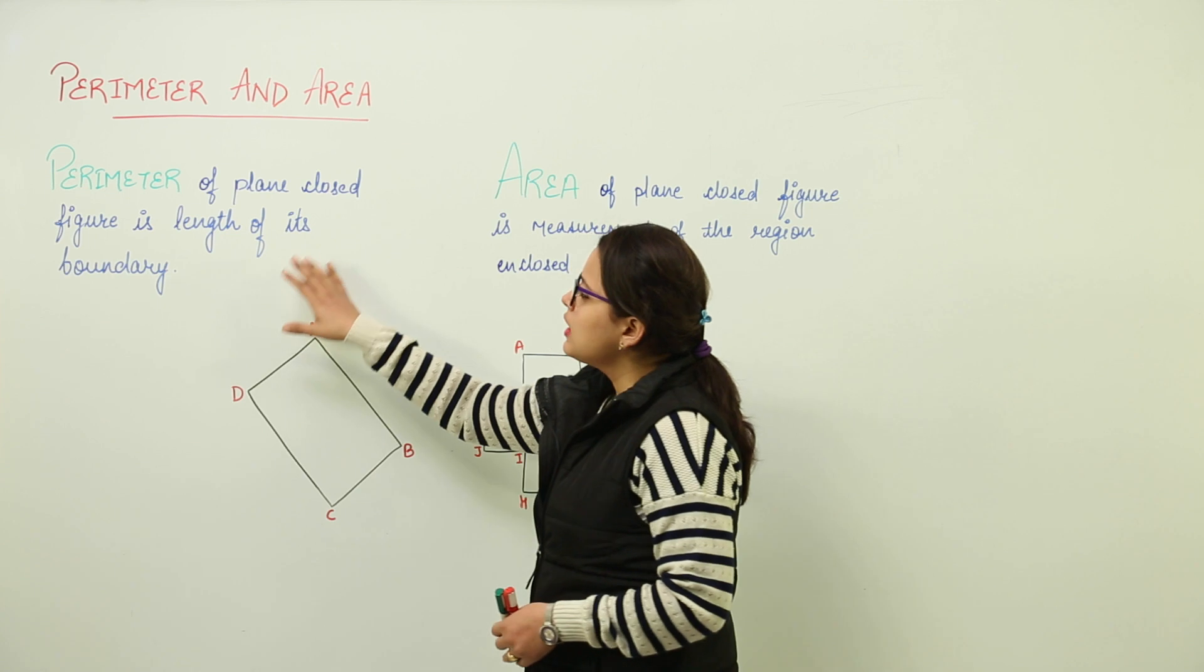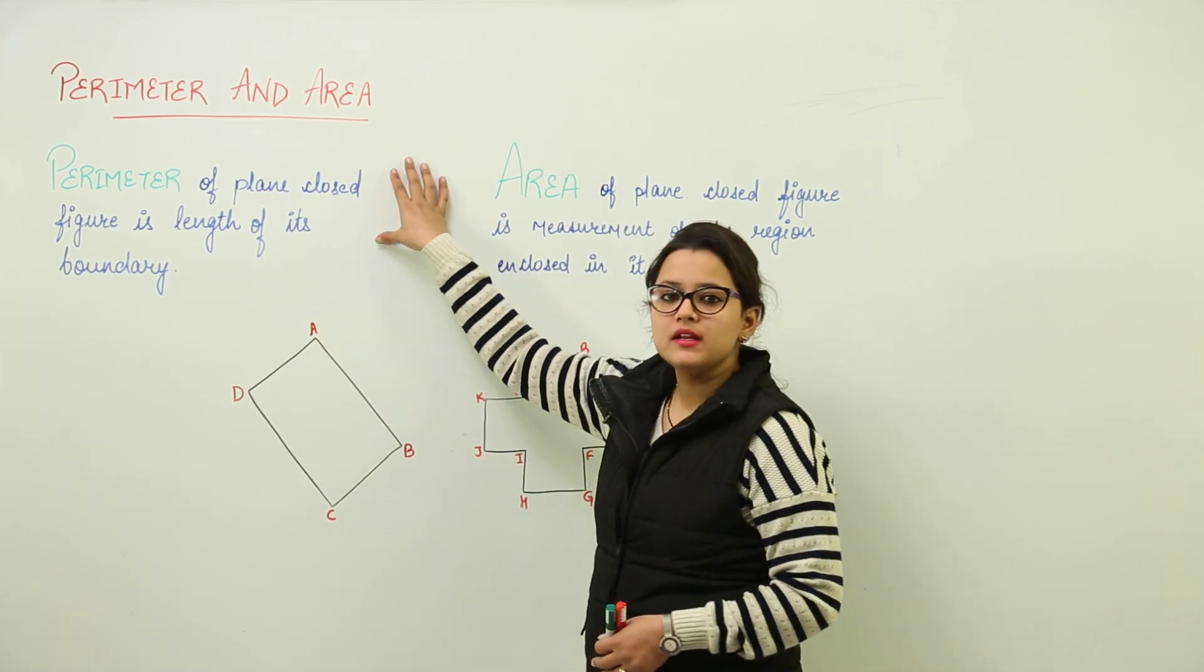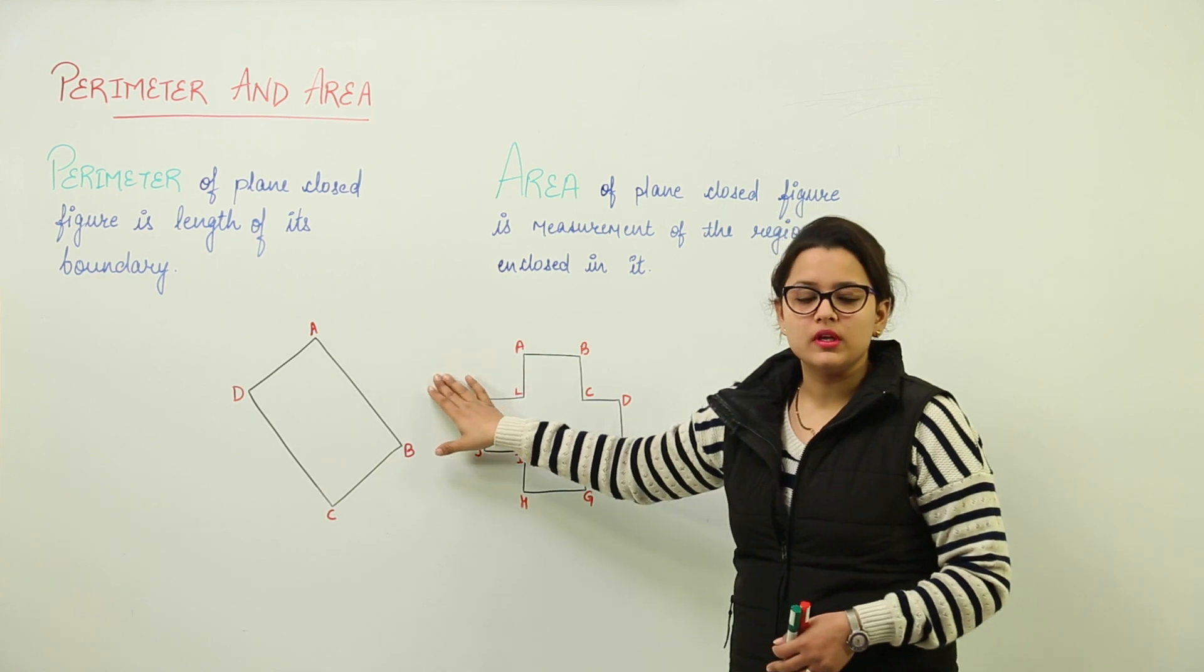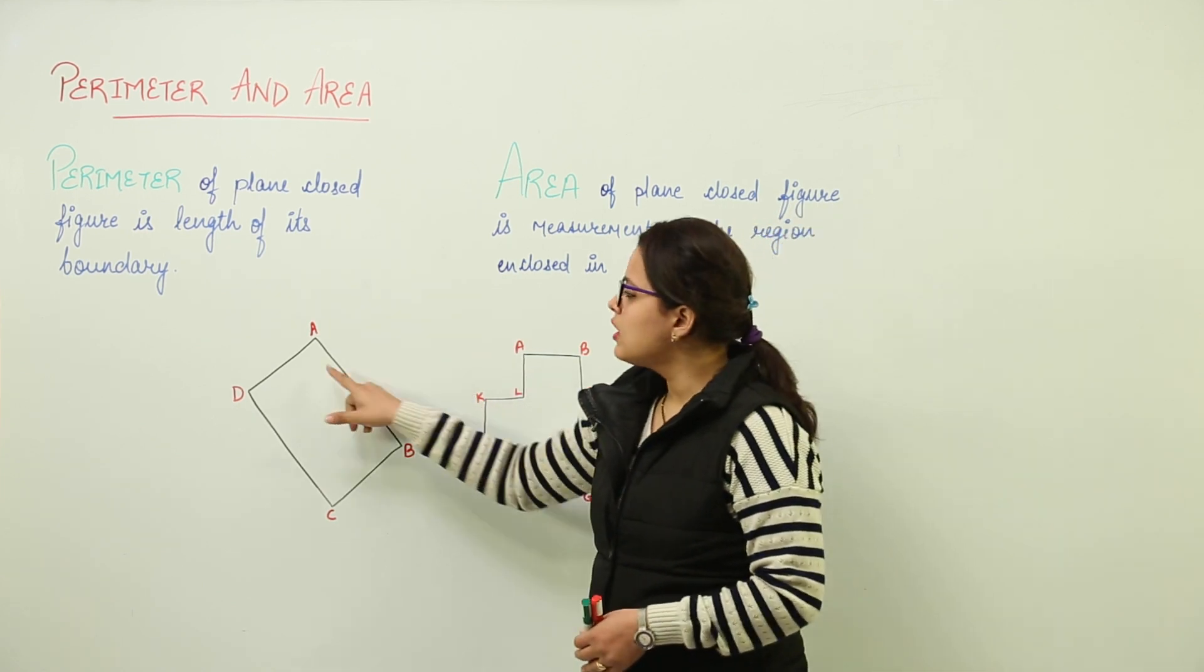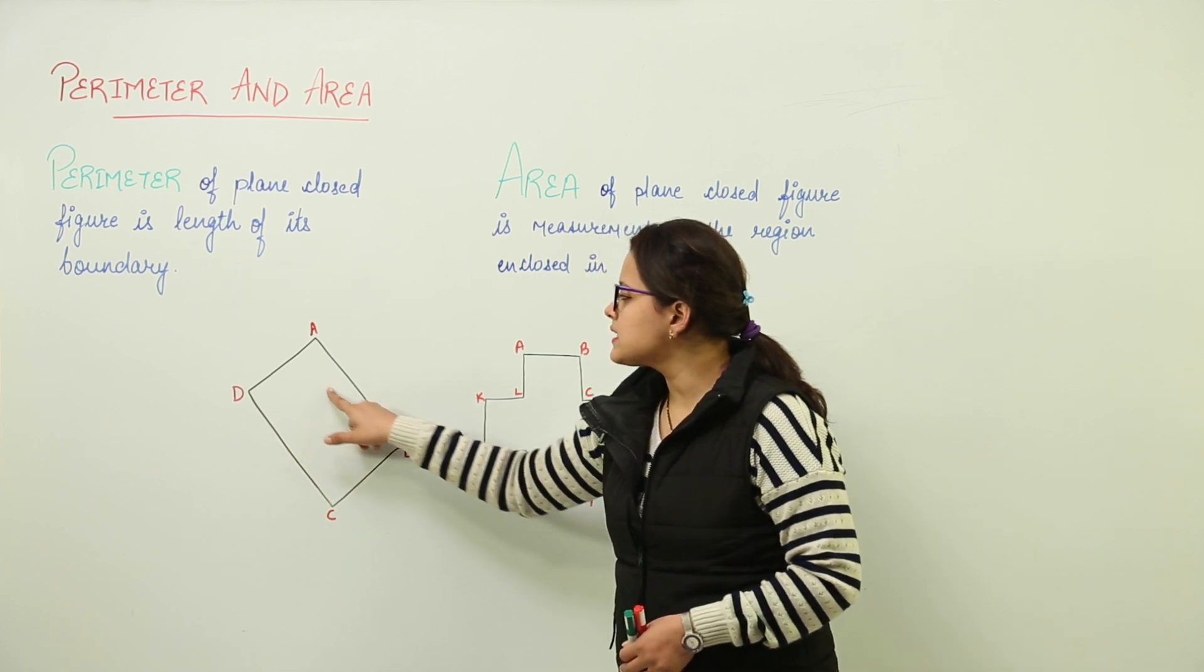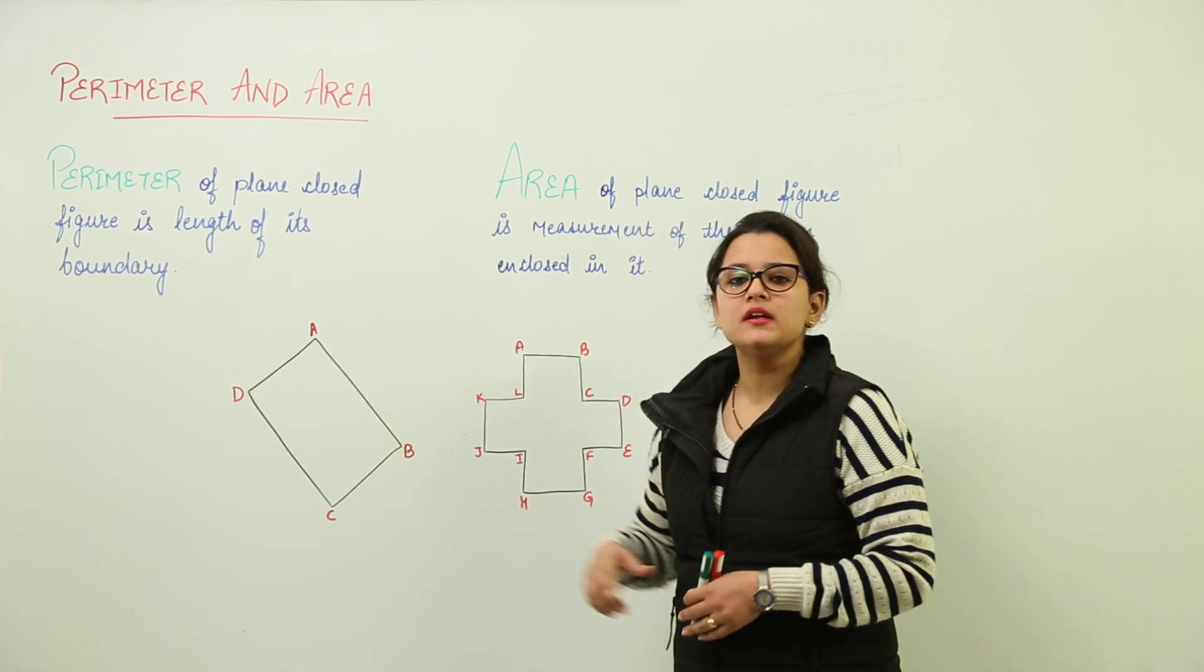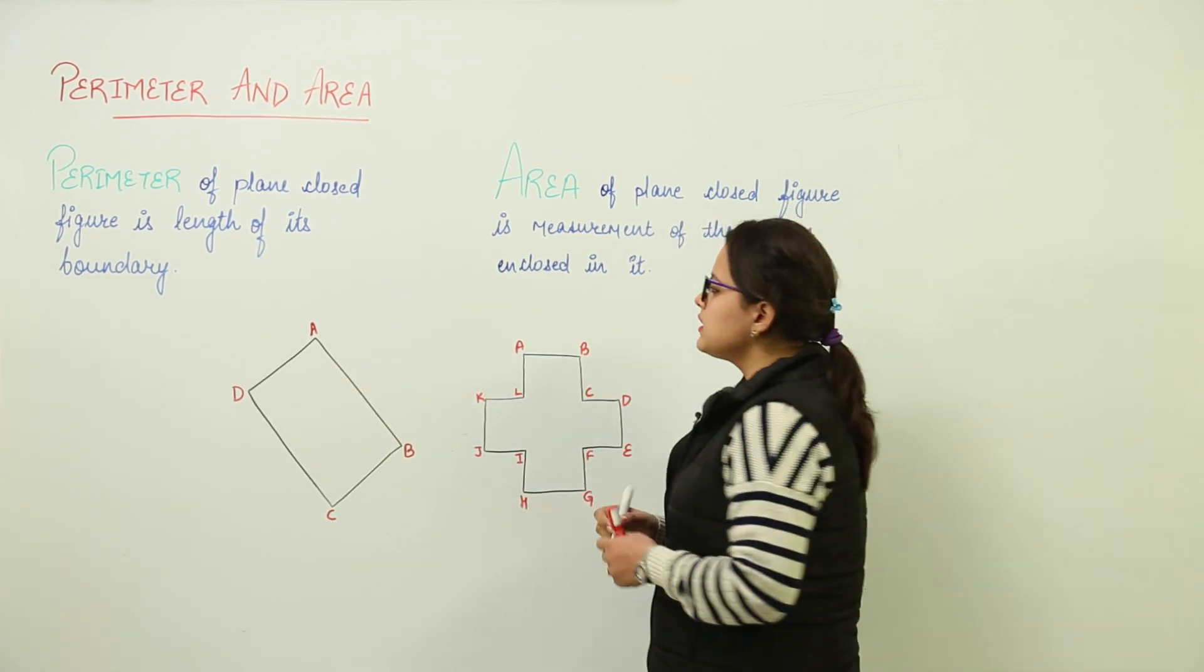In perimeter, how do we define it? See, both perimeter and area are defined for closed figure only. What do I mean by a closed figure? A closed figure means it should be having all the sides meeting at a point and there should not be any side open, right?